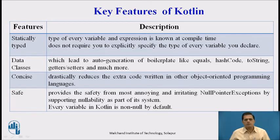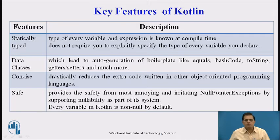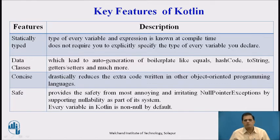The third feature is concise. It drastically reduces the extra code written in other object-oriented programming languages. The fourth feature is safe. It provides safety from the most annoying and irritating null pointer exceptions by supporting nullability as part of its type system. Every variable in Kotlin is non-null by default.